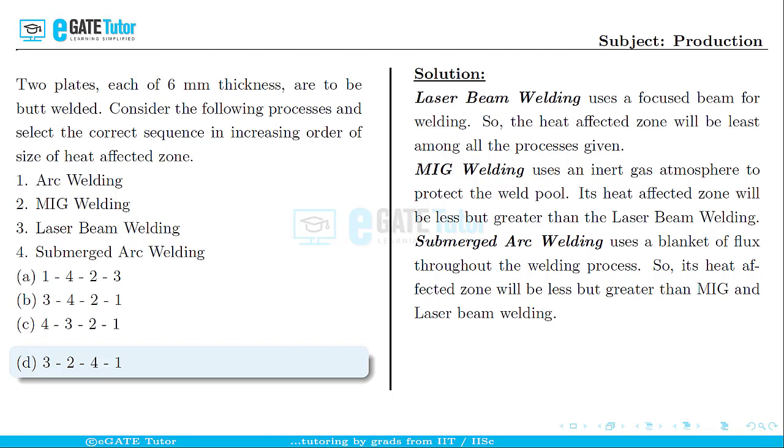The last process which has the highest heat affected zone among these four processes is arc welding. Since arc welding process is carried out open to atmosphere and has low heat input, it indicates that the total heat content will be high and the heat affected zones will be high.